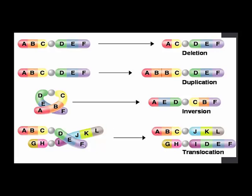Translocation: we have two chromosomes — one reading A, B, C, D, E, F and another reading G, H, I, J, K, L. But the first chromosome doesn't read ABCDEF — it reads A, B, C, J, K, L, because DEF has been translocated to the other chromosome. Those are your examples of chromosomal mutations.